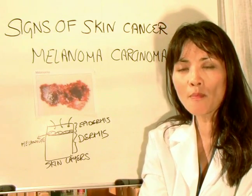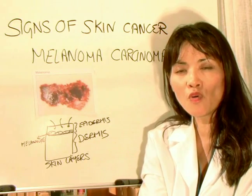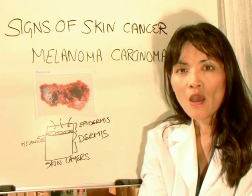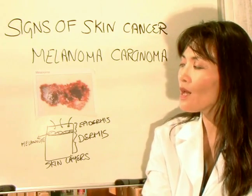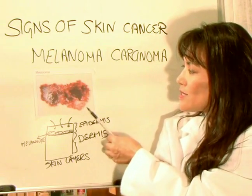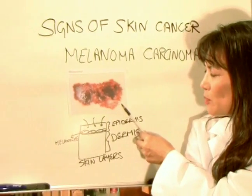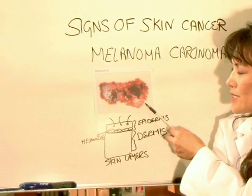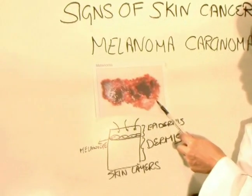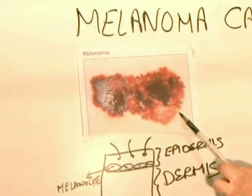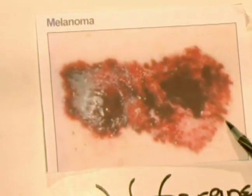In this clip, we're going to talk about one of the most aggressive forms of skin cancer, and it's called melanoma. If we look at this picture here, you can see a picture of a melanoma. This particular lesion shows all four ABCD signs of melanoma or skin cancer.